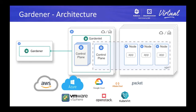The second cluster, in the middle, is the seed cluster. As I mentioned, Gardener is capable of creating Kubernetes clusters as pods. The role of the seed is to run control planes of freshly created Kubernetes instances. Each seed must have a running component called Gardenlet. There is an analogy to Kubernetes core components: Gardenlet to Kubelet, and Gardener API server, controller manager, and scheduler to Kubernetes ones.